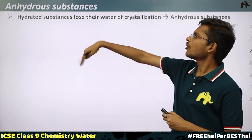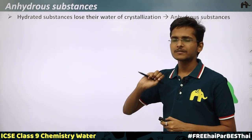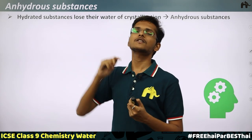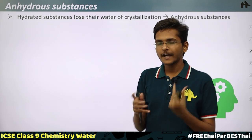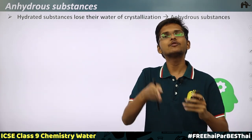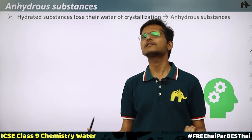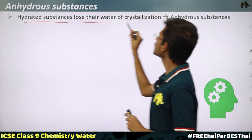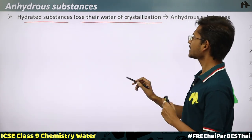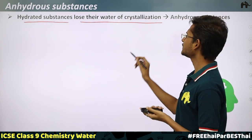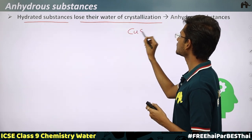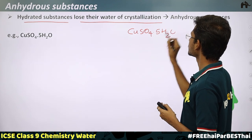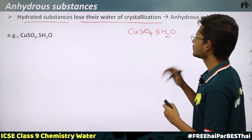What is an anhydrous substance? We simply remove the water of crystallization from the hydrated substance, and whatever is left over is the anhydrous substance. Hydrated substances lose their water of crystallization. For example, if I have copper sulfate·5H₂O and I heat it, it will lose its five water molecules.